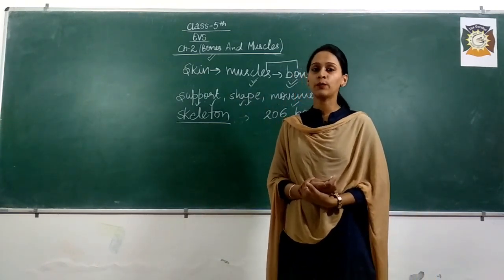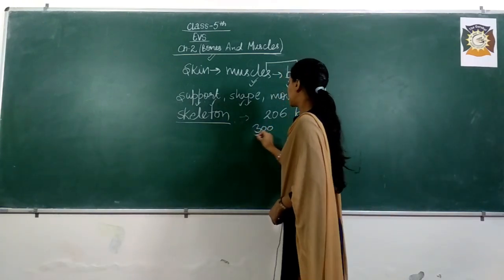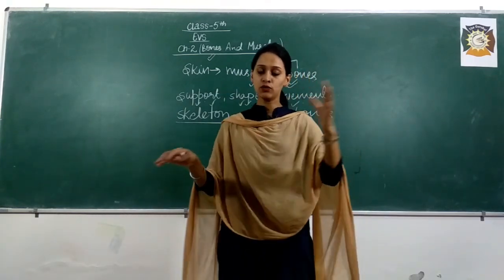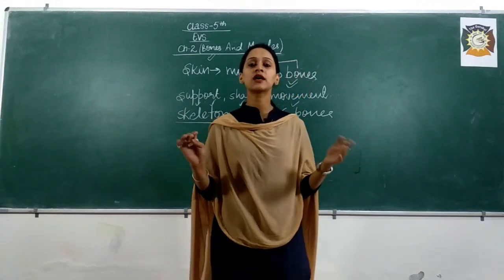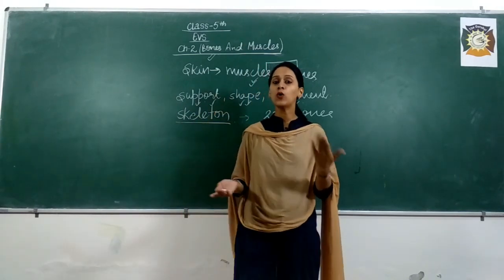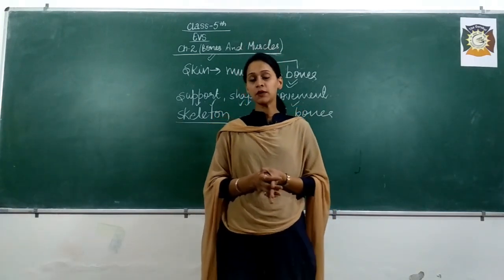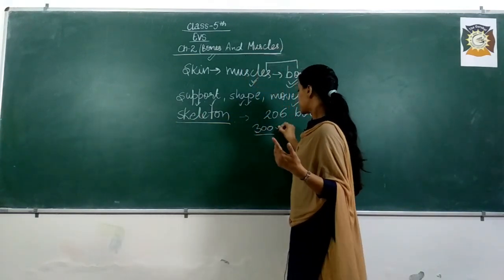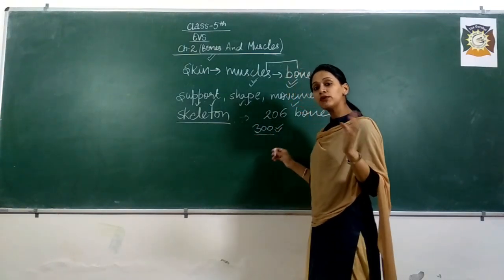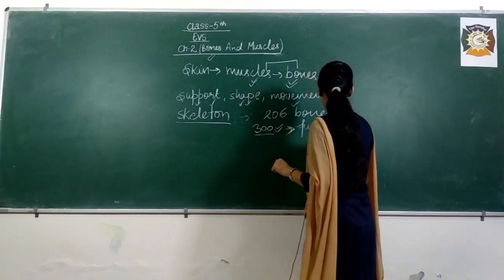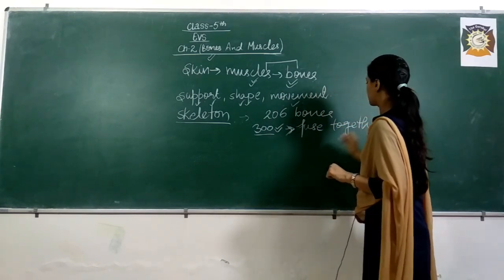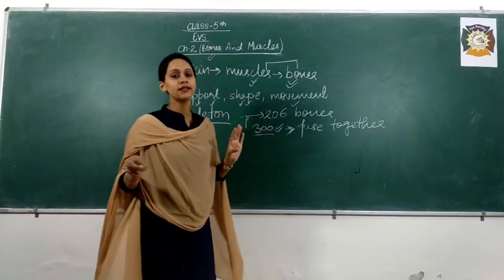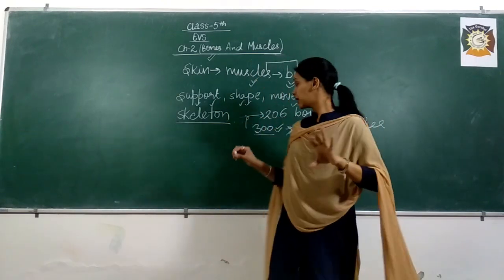If you talk about a newborn baby, a newborn child has more than 300 bones in the body. But later on, as the body grows — as you go from 5th class to 6th class and grow older, your height increases — the bones also increase in height. These 300 bones in a newborn baby thereafter fuse together to finally make 206 bones in the body.